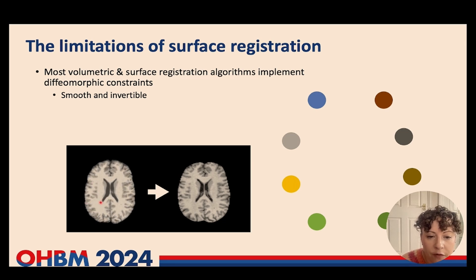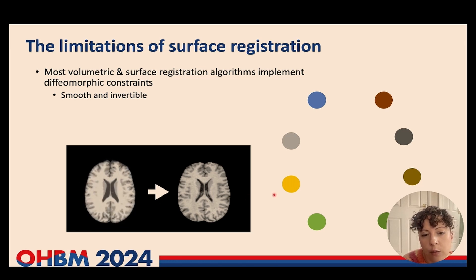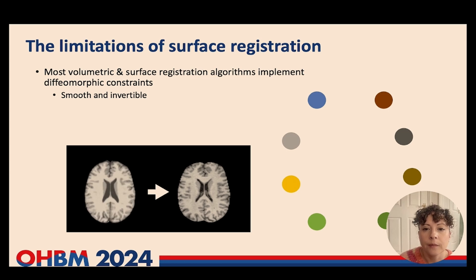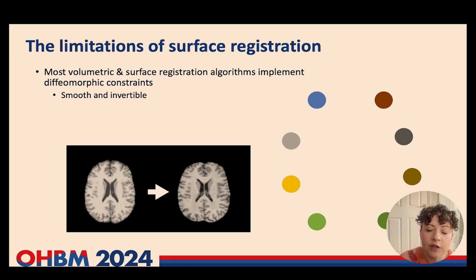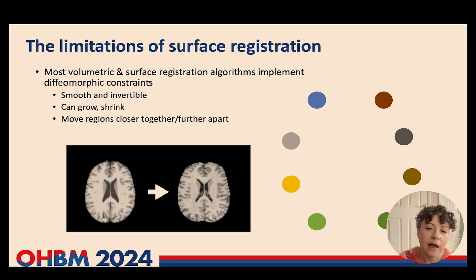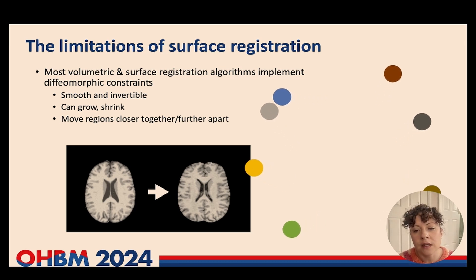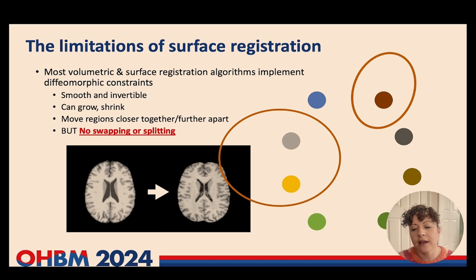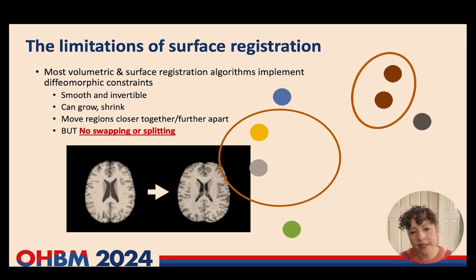The idea is that you're not going to stretch or shear images too much locally or allow any overlapping or tearing of the warp. We can see an example of this for volumetric registration where this brain image is smoothly deforming until its cortical folds more closely overlap with the equivalent folds in a target subject. But the problem with diffeomorphisms is that while they allow us to smoothly and non-rigidly deform our images, what they absolutely prohibit is any swapping of the locations of regions or the splitting apart or collapsing of regions.